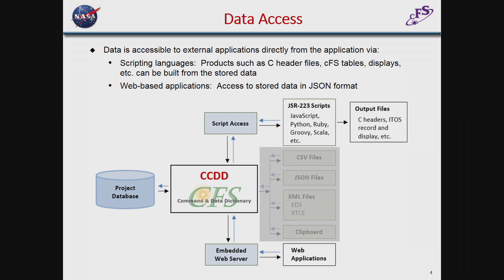I'm going to talk about data access. The application stands in between the Postgres database and the outside world. The main method is via script access — the application allows scripts to be executed from within the application itself. The scripts can call predefined Java functions to get the data and then use it to construct output products, like C header files, ITOS record files, display files, CFS tables, or whatever you need the command and telemetry data for. The script then creates the files for you, so it can be fairly well automated.